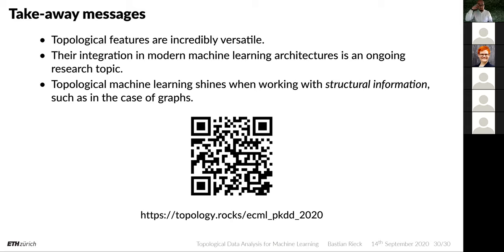A clarification: in the topological autoencoder, the persistence diagram of the input mini-batch is computed once since we cannot change the input's topology. However, we do allow the latent space persistence diagram to change during training — the topology of the latent space is what we optimize.